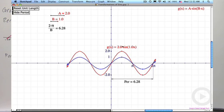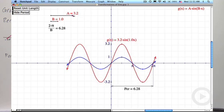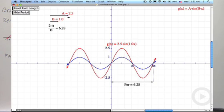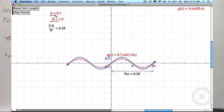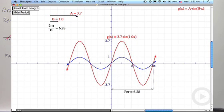If I increase the value of a, you can see what happens. It increases the amplitude. It increases the maximum and minimum values. I can also make a less than 1, in which case you get a vertical compression. So this is a vertical compression. This is a vertical stretch.